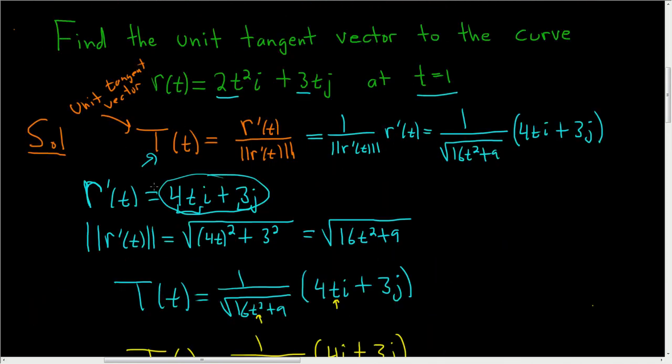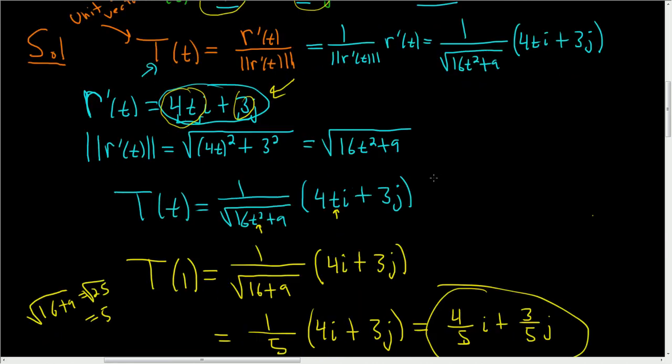So again, first take the derivative using the power rule. Then find the magnitude by squaring the components, adding them, and taking the square root. Rewrite everything using the formula, then plug in 1 to finish. I hope this helps.